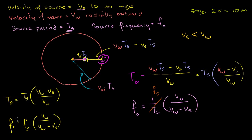In the last video, we figured out the formulas for the observed period and frequency for an observer sitting in the path of the source — the source is moving towards the observer. This is the example where the train is moving towards you, and you perceive the train's horn as having a higher pitch or a higher frequency. We were able to do that by just doing a thought experiment: the object starts here, and after one period — a period is the measure of time over which the source emits a cycle — it emits a cycle every period.